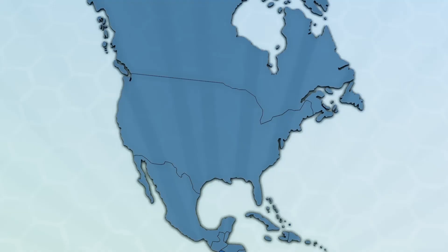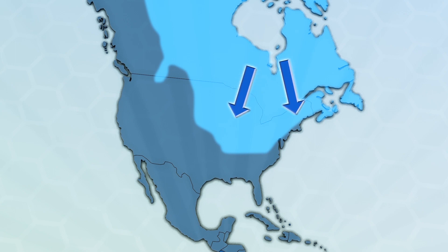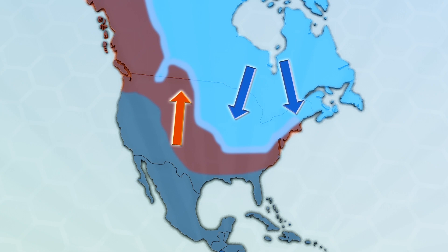On Mother's Day weekend, the wobbly Polar Vortex dumped freezing temperatures on parts of the Midwest and eastern U.S., with springtime snow falling in parts of New York and New Jersey.